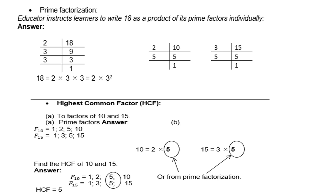Now if you want to find the highest common factor, or HCF, of 10 and 15, write down the factors of 10: 1, 2, 5, and 10. Factors of 15: 1, 3, 5, and 15. What do they have in common? Both have a 5 — since 10 = 2 × 5 and 15 = 3 × 5, they share a 5. So the highest common factor is 5.